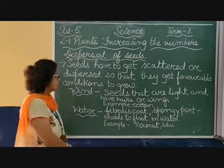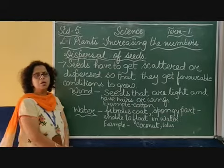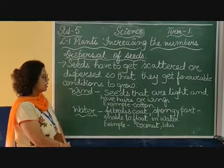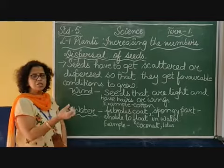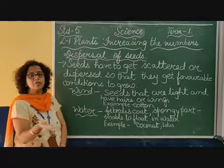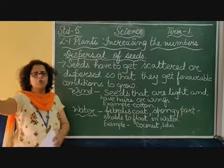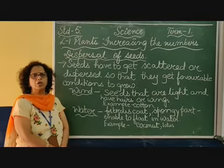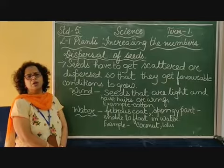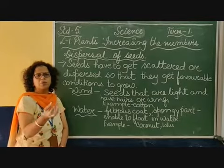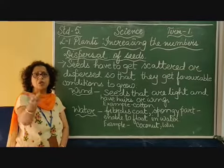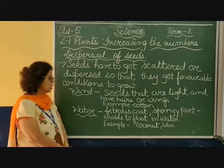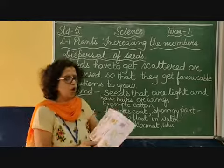The next agent is water. Water helps seeds to move from one place to another. If seeds are light or spongy, they float. Water flows in rivers and seas, and many things float in water. If you go to the riverside, you can see fruits, vegetable bark, or other things floating. If a seed is heavy it will sink, but if it is fibrous or spongy it is able to float in the water.